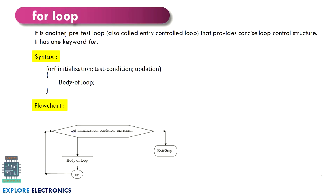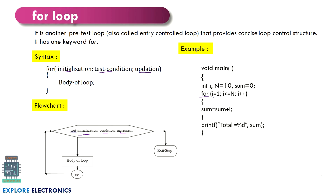Now let's understand what is for loop. This is another pre-test loop — we test before entering the loop. We have the test condition written and if it is satisfied, only then we enter the loop. This is also called an entry controlled loop. In for loop we have a concise loop control structure: initialization, test condition, and updation. This is the flowchart of for loop — we have initialization, we check the condition, execute the body, then the increment operation takes place.